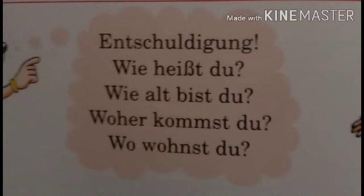'Woher kommst du?' means from where do you come, and 'Wo wohnst du?' means where do you live. The key verbs used here are: 'Entschuldigung' — excuse me; 'heißen' — to be called; 'bist' — are; 'kommst' — come, from 'kommen'; and 'wohnst' — to live, which is a full verb.